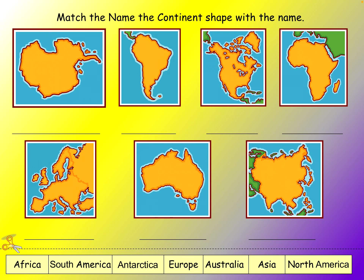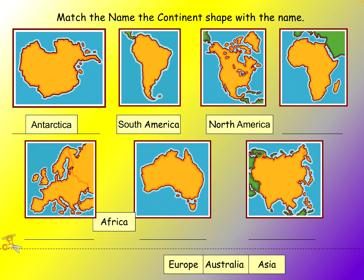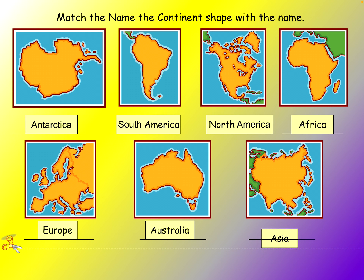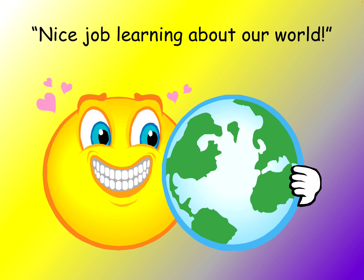Let's practice our continents one more time. Upper left: Antarctica. Then South America. North America. The backwards F — Africa. Europe. The mama kangaroo and the joey — Australia. And the Asian butterfly — Asia. Thanks for paying attention. You guys have a wonderful day and I will see you soon.